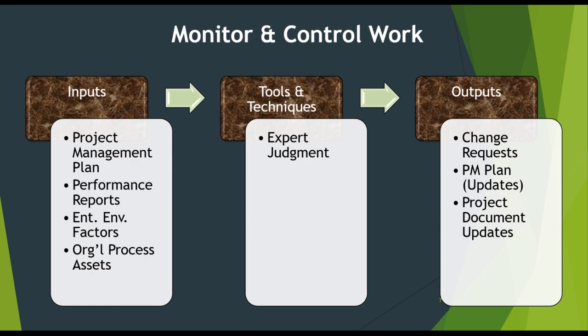Monitoring and control work — the project monitoring and control phase is all about measuring the performance of the project and tracking progress. It is implemented during the execution phase. The main goal of this phase is to check whether everything is aligned with the project management plan, especially concerning financial parameters and timelines.